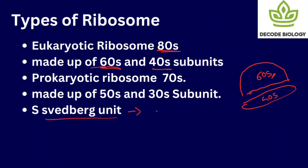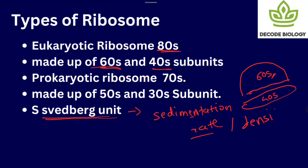The Svedberg unit tells us the sedimentation rate of a particle or molecule — essentially the density of the particle. The large subunit has a density of 60S, the small subunit has a density of 40S. When these two combine, their combined density is around 80S — not 100, because it is density, so it will be less than the simple sum. So the whole eukaryotic ribosome is 80S.